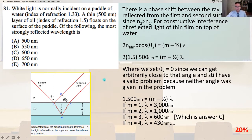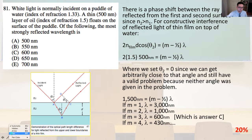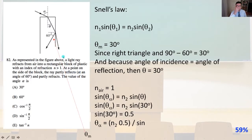m equals 3, lambda equals 600 nanometers — that's answer C. Number 82.